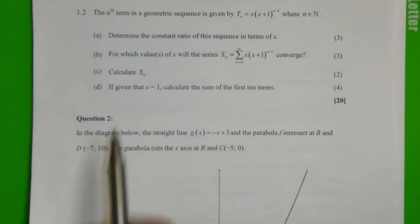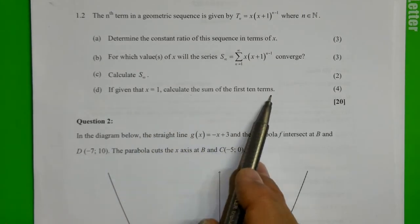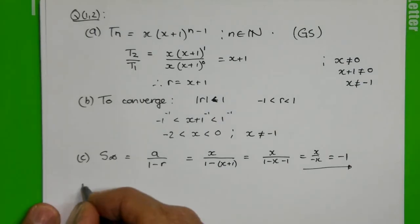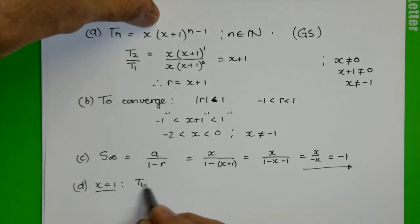Now they say, given that x is equal to positive 1, calculate the sum of the first 10 terms for 4 marks. Let's see. x is equal to 1 was given. Now that would mean that term 1 is 1.